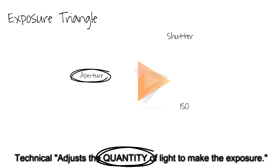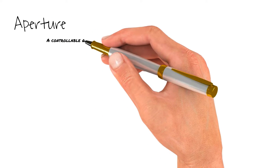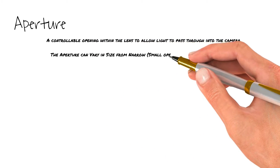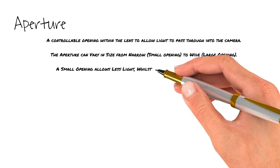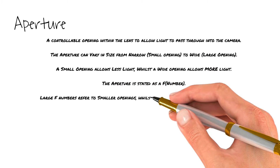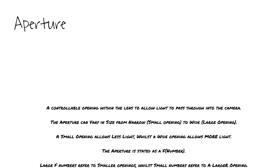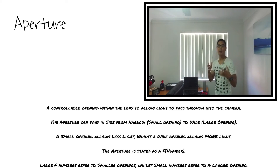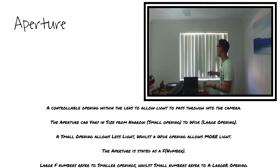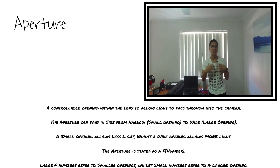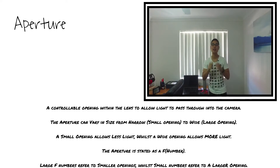We're going to focus on the technical role in this video, beginning with the aperture. The aperture is basically a controllable opening within the lens to allow light to pass through into the camera. The aperture can vary in size from narrow with a small opening to wide with a large opening. A small opening allows less light, whilst a wide opening allows more light. The larger the aperture, the more light we can pass through; the narrower the aperture, the less light.